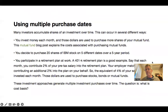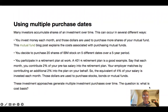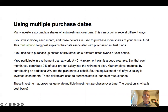Many people make investment purchases on different dates, and there are several reasons why. Let's say you invest money each month and those dollars are used to purchase more shares of a mutual fund. On the other hand, you might decide to purchase 20 shares of IBM stock on five different dates over a five-year period — we'll see an example of that shortly.